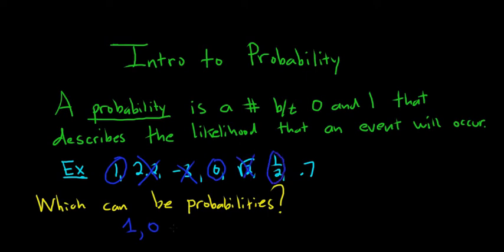1 half, that can be a probability. So 1 half works. And 0.7, that's between 0 and 1 also, so that can be a probability. 1 half is 0.5, so that's also a number between 0 and 1. So these are the numbers that can be probabilities.